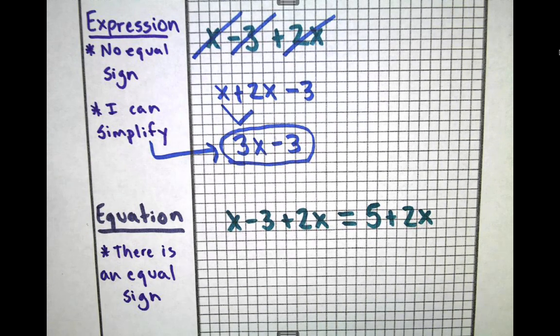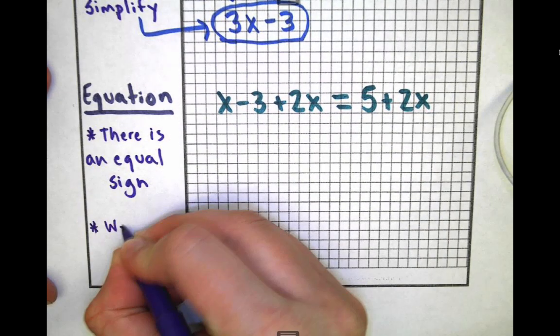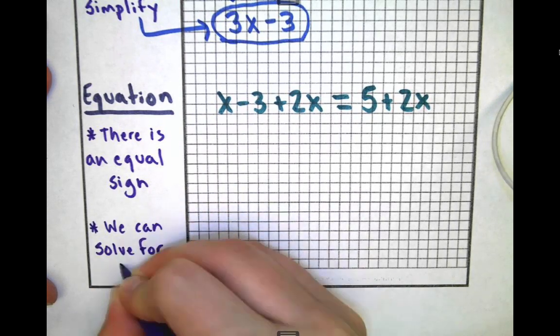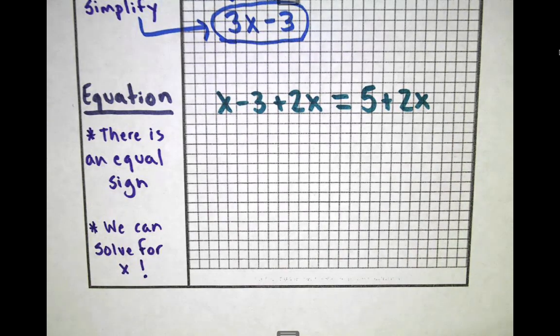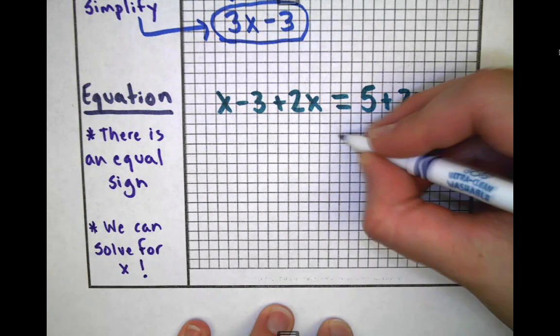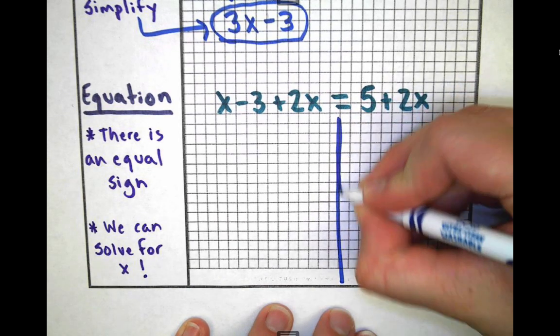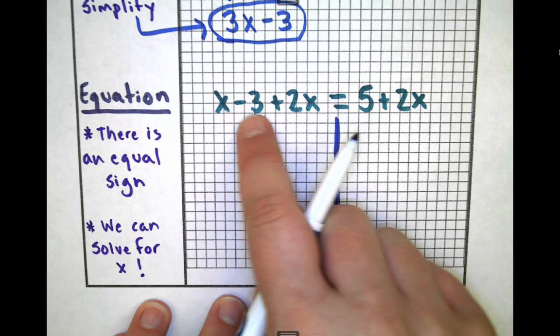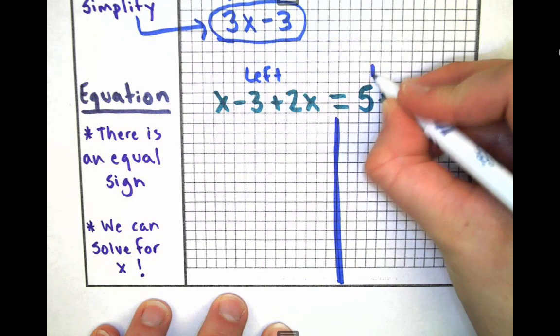This thing is solvable. We can do more than simplify. We can actually solve for x, which is awesome. We're going to practice solving for x and go through what those steps look like. What I like to do is go to the equal sign and draw a line down the middle. I'm going to split this in half so there's a left side and a right side. x - 3 + 2x would be on the left, and 5 + 2x would be on the right.